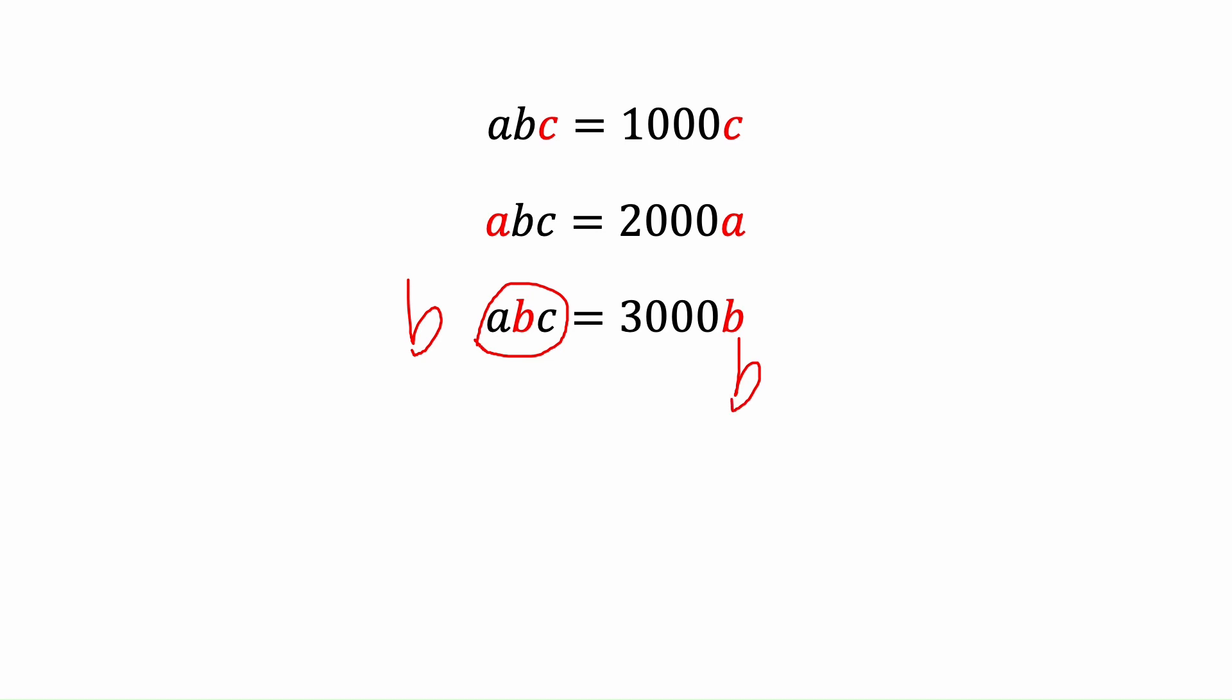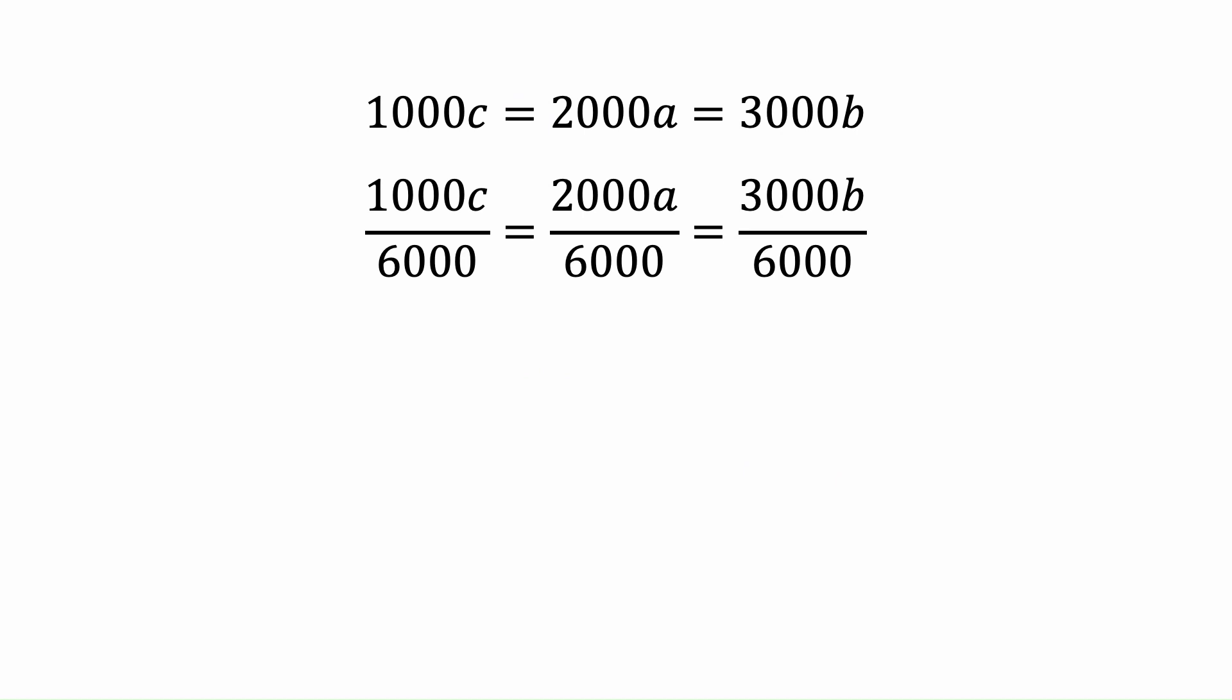Now, all of the left sides are equal to each other, and all of the right sides need to be equal to each other. So we have 1000c equals 2000a equals 3000b. Now we want to simplify these equations.